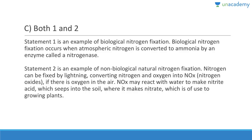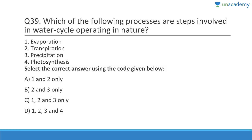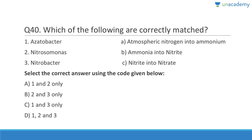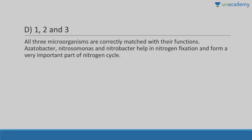Question thirty-nine: Which of the following processes are steps involved in the water cycle operating in nature? Evaporation, transpiration, and precipitation — answer is C, one, two, and three. Photosynthesis is not a process involved in water cycle operation. The water cycle includes evaporation, condensation, precipitation, and transpiration. Question forty: Azotobacter converts atmospheric nitrogen into ammonium; Nitrosomonas converts ammonia into nitrite; Nitrobacter converts nitrite into nitrate. Answer is D, all three correctly matched.